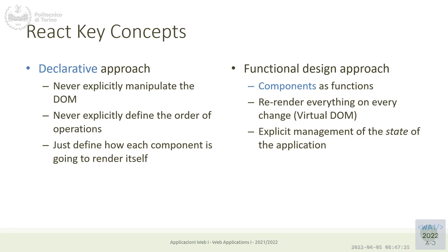While normally you would think about the transition — the page has some context, I need to change this element or add that element — in React we think: right now the page has this content, and since some information has changed, now the same page will have a different content. You focus on the result, not on how to reach the result. That will be the work of the framework — to transform the page from the first content to the second.